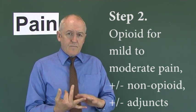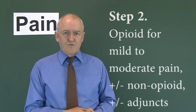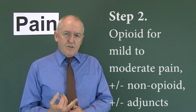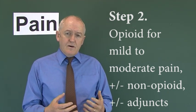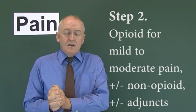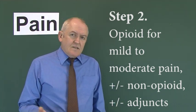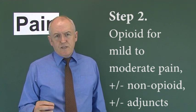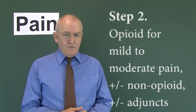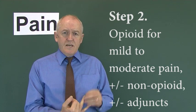We wouldn't want a double dose of non-steroidal either, because of gastrointestinal side effects. So that's the second step. To recap: the first step is non-opioid with or without adjunct; the second step is an opioid for mild to moderate pain, with or without a non-opioid and with or without adjuncts. Some recent research has shown that giving patients small doses of more powerful opioids can be as effective or more effective — so this is not a hard and fast rule, but it's a good principle to follow.